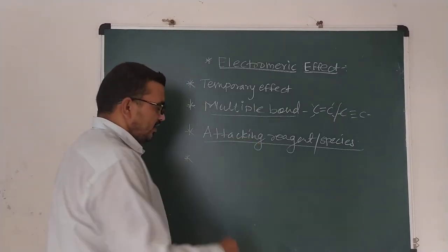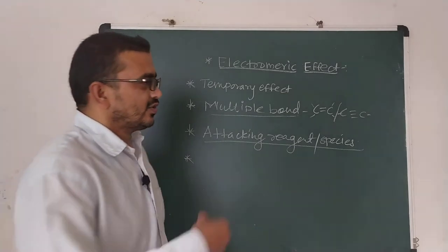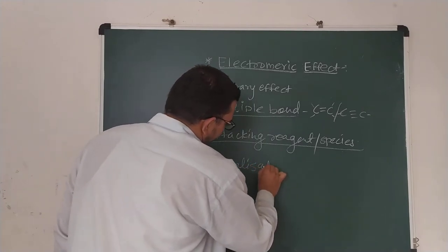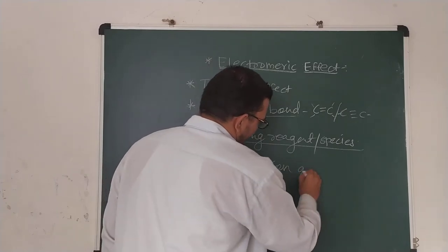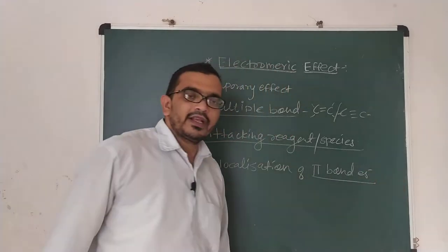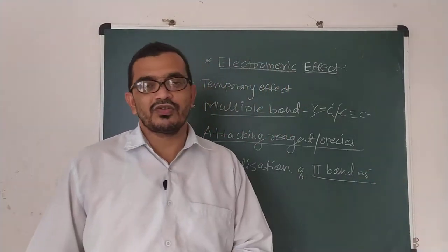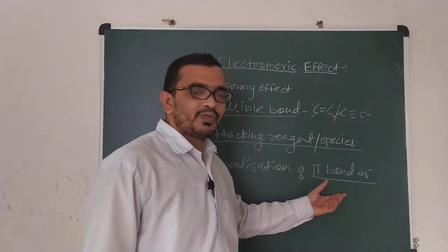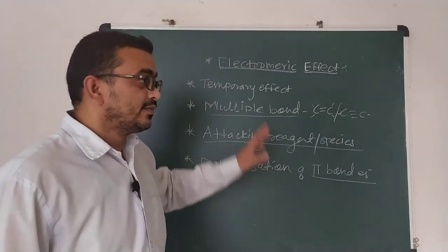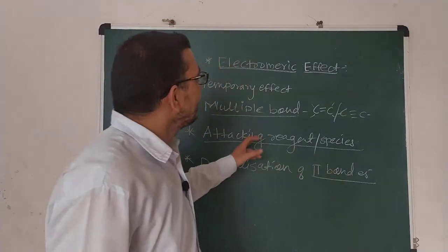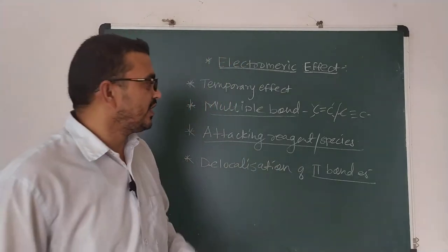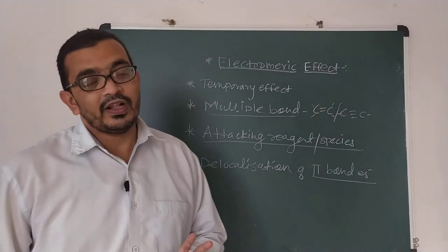What is delocalized in this effect? There is delocalization of pi bond electrons, which is again very important. This is similar to resonance, because in resonance also we observe delocalization of pi electrons. However, resonance is a permanent type of effect, while the electromeric effect is a temporary type of effect — this distinction is very important.